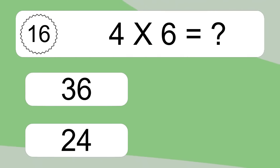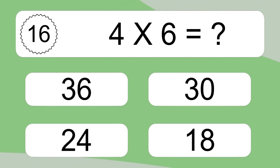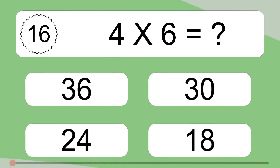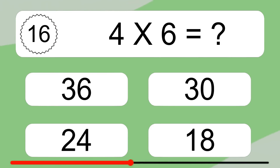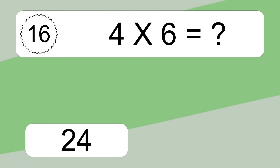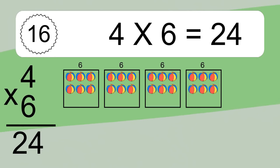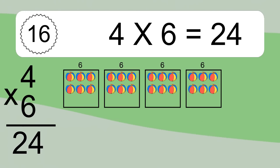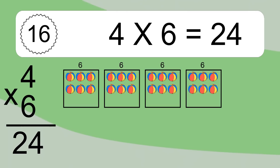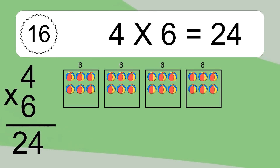4 times 6 equals what? 4 times 6 equals 24. We have 4 boxes and each box has 6 colorful balls inside. If you count all the balls in all the boxes together, you will have 4 times 6 balls. This equals 24 balls.